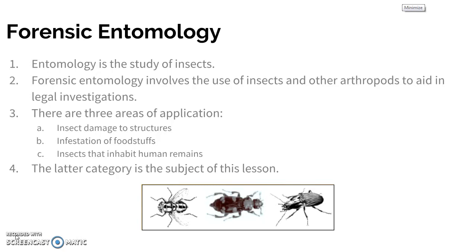There are three main areas of application for forensic entomology. The first is insect damage to structures — termites, carpenter ants, and how they eat through wood to create unstable structures. The second is infestation of foodstuffs, such as large amounts of grain or crops being destroyed by insects. And finally, insects that inhabit human remains, which is the category we are going to focus on in this presentation.